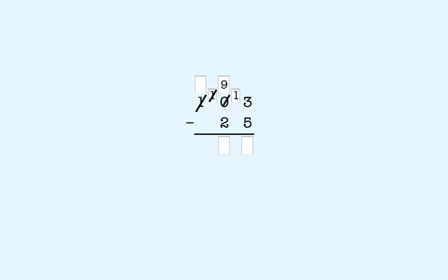In the ones place, we now have 13 minus 5, which is 8. Now the tens place — we have 9 minus 2, which is 7. So we put a 7 in the answer box in the tens place. In the hundreds place, we don't have any hundreds left. That means we're done. The answer is 78.